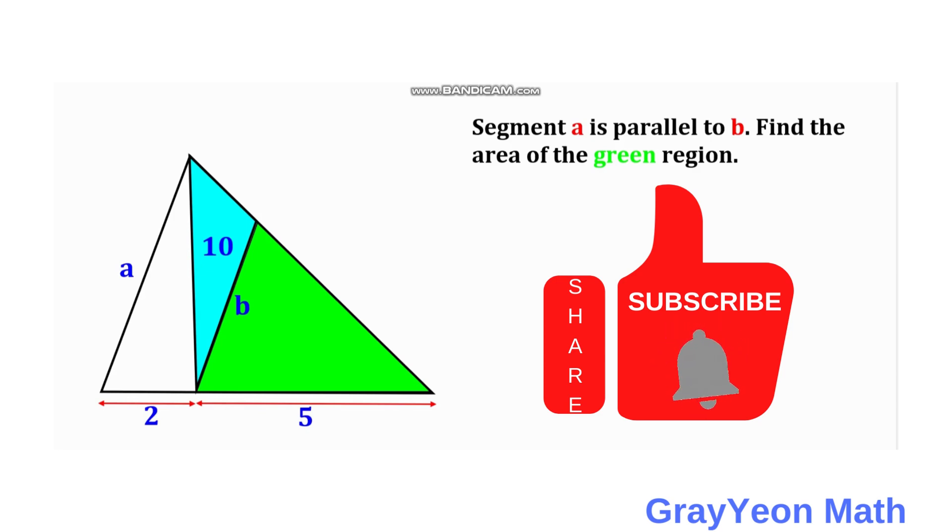Welcome to GrayeonMath. We have a triangle subdivided into three parts. The green triangle inside the largest triangle has one side which is parallel to the side of the largest triangle, and that side is B, parallel to segment A.